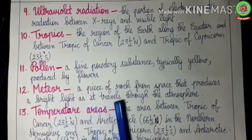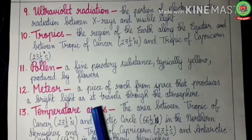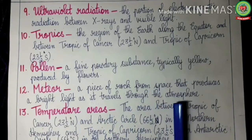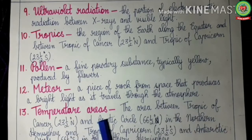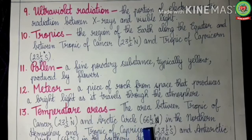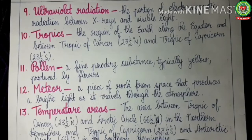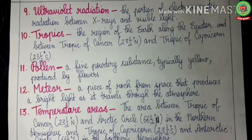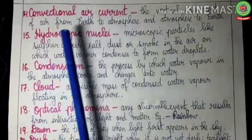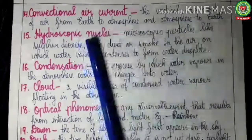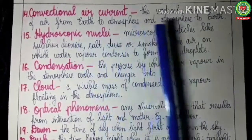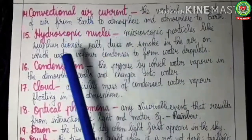Meteor: a piece of rock from space that produces a bright light as it travels through the atmosphere — they are called 'Tara Tara' in Hindi. Temperate areas: the areas between the Tropic of Cancer at 23.5 degrees north and the Arctic Circle at 66.5 degrees north in the northern hemisphere, and between the Tropic of Capricorn at 23.5 degrees south and the Antarctic Circle at 66.5 degrees south in the southern hemisphere. Convection current: the vertical movement of air from the earth to the atmosphere and back is called convection current.